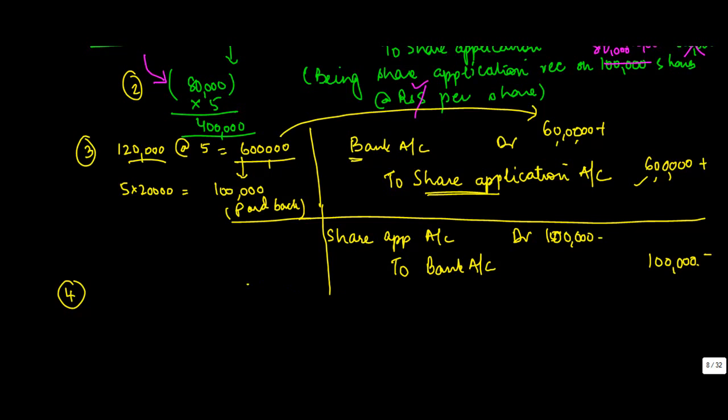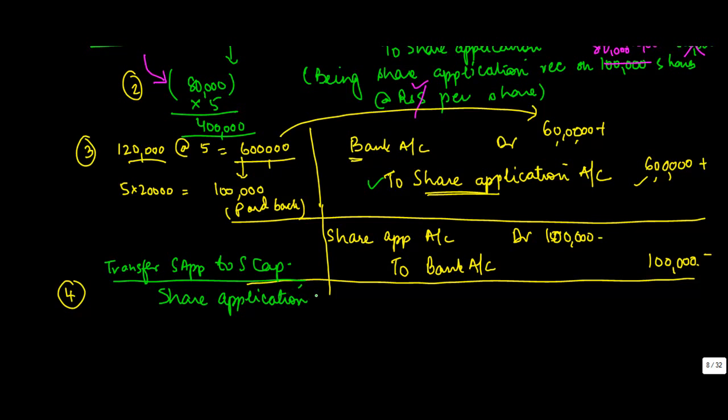Now once this share application account has been closed, all the entries have been done, then you transfer share application to share capital. So this credit of 500,000 which you had is reversed. So you write share application debit. Because ultimately, as I told you, this money has to go to the share capital account. So you debit it by 500,000 and credit share capital account. This is once the process is completed.